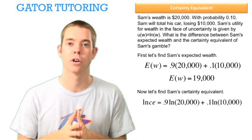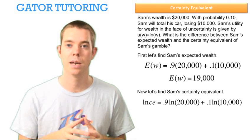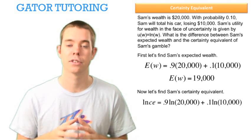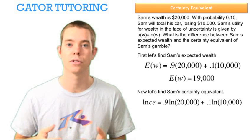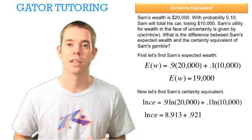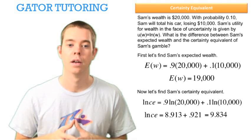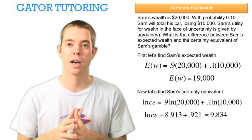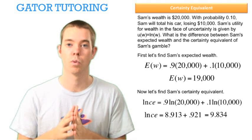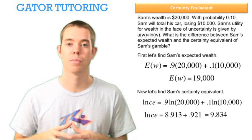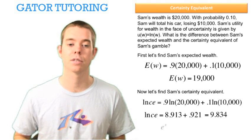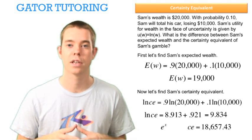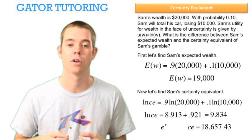We need to bring in our utility function at each state of nature. So 90% of the time we expect to receive $20,000 — that's 90% times the ln of $20,000 — plus 10% times the ln of $10,000. We work this out and find that the ln of the certainty equivalent equals 9.834. To solve for the certainty equivalent, we raise both sides — press the E-to-the-X button on your calculator with 9.834 entered — and you'll find the certainty equivalent equals $18,657.43.